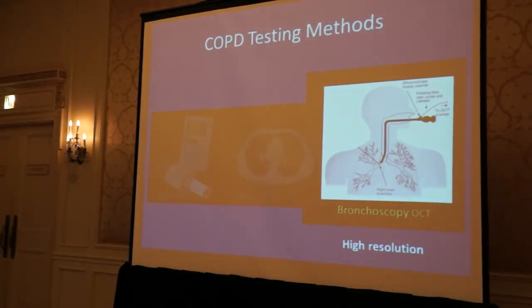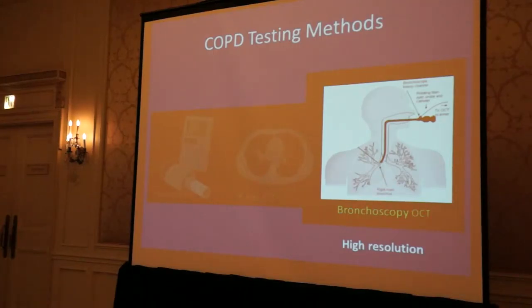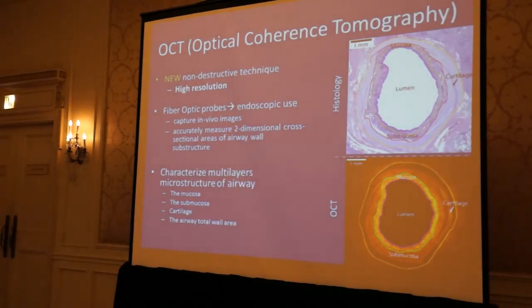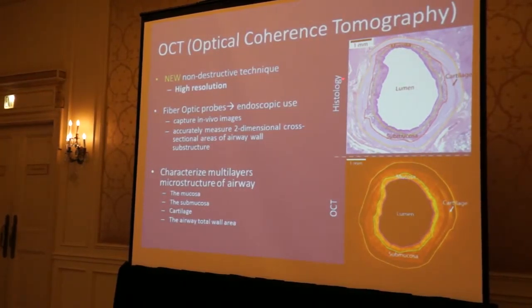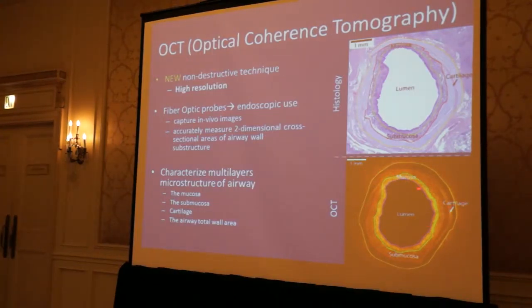Bronchoscopy, or OCT imaging, is a completely new technique specific to my study that is similar to ultrasound in that it uses light waves rather than sound waves, allowing us to produce high-resolution images. Optical coherence tomography, OCT, is a non-destructive imaging technique that produces detailed high-resolution images of small airways. Because OCT has near-histological resolution, we were able to characterize multilinear microstructures in the lungs, such as the submucosa, the cartilage, the mucosa, and the lumen.